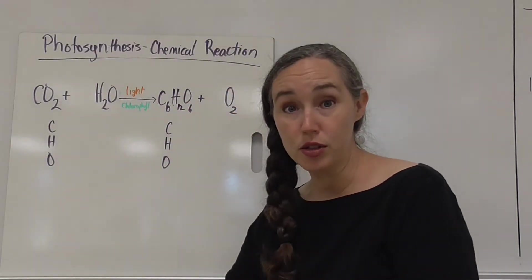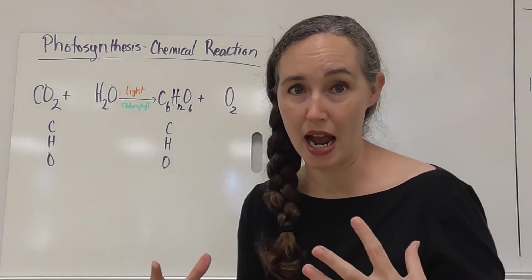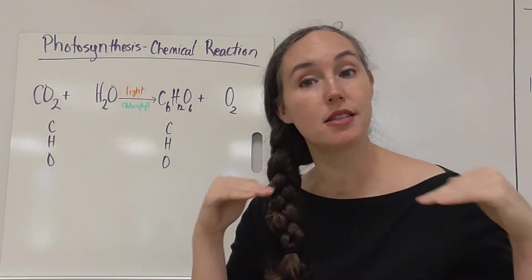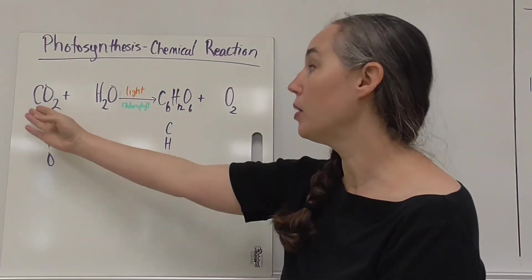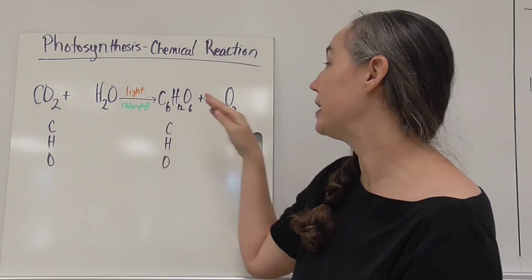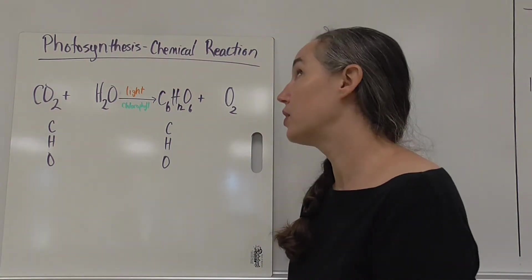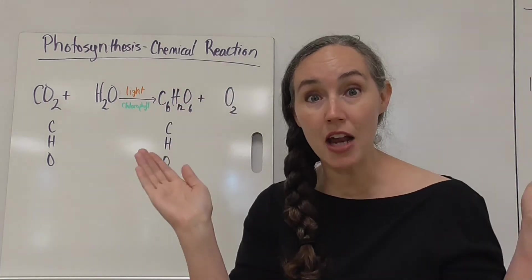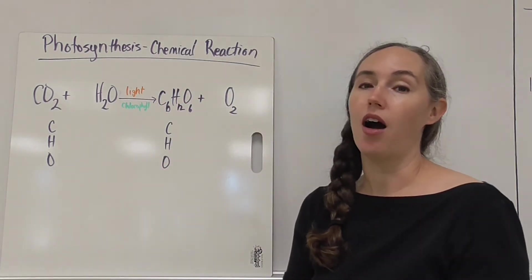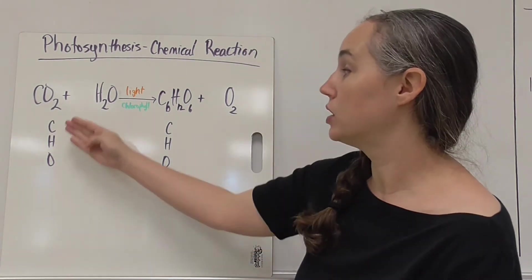Now photosynthesis is actually a huge series of chemical reactions but a lot of times you'll see it as a very simplified reaction: carbon dioxide plus water in the presence of light and chlorophyll makes glucose and oxygen. So this is a nice little neat net reaction and we can balance this chemical equation using the skills that we've learned previously. So let's do that real quick.